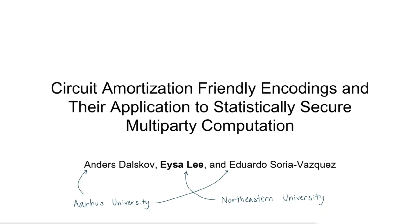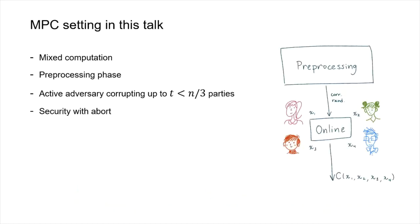This is 'Circuit Amortization Friendly Encodings and their Application to Statistically Secure Multi-Party Computation.' The setting in this talk is that we want to support computation over arithmetic and boolean circuits, so we want parties to be able to efficiently convert between the two. We allow parties access to a pre-processing phase in which they can pre-compute some correlated randomness independent of their inputs, which they can then use in the online phase for more efficient computation.